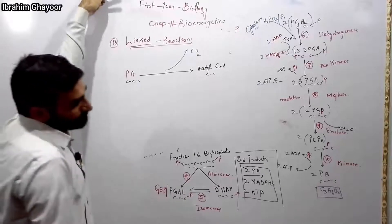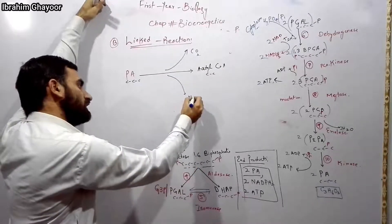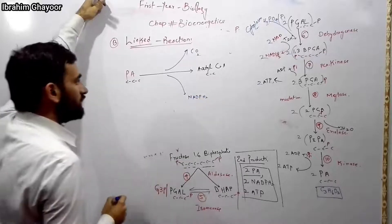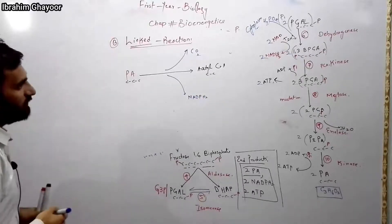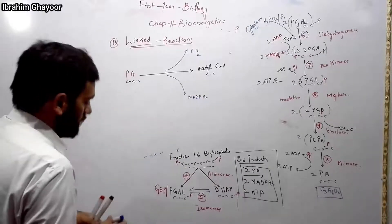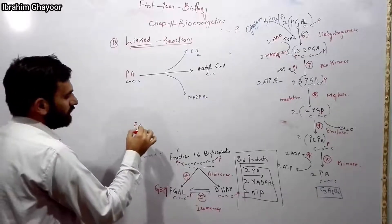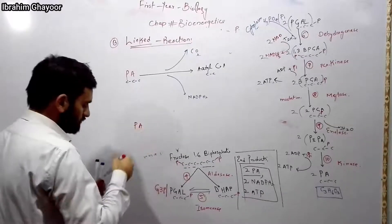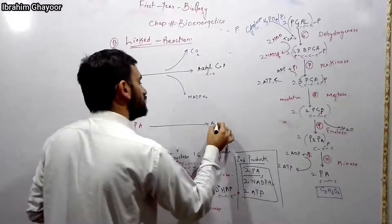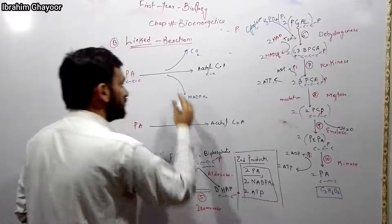In the link reaction, pyruvate (3 carbons) loses one carbon as CO2 — this is decarboxylation. The remaining 2-carbon unit is combined to form acetyl-CoA. NADH2 is also produced. So from each pyruvate: one CO2 is released, one NADH2 is formed, and one acetyl-CoA is produced.